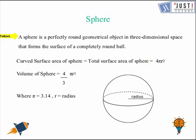Let's start with the introduction to spheres. A sphere is a perfectly round geometrical object in three dimensional space that forms the surface of a completely round ball. Curved surface area for a sphere is basically the total surface area of it, which is calculated by the formula 4πr².